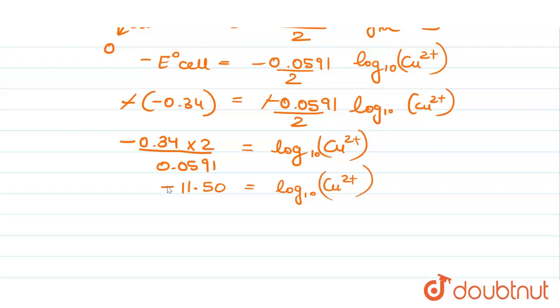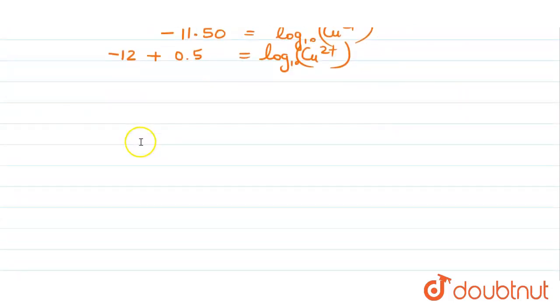Now we can write minus 11.5 as minus 12 plus 0.5 equals log of Cu2+. Why did we write like this? Because now it makes it easier to solve this question. Calculation wise this will be easy.